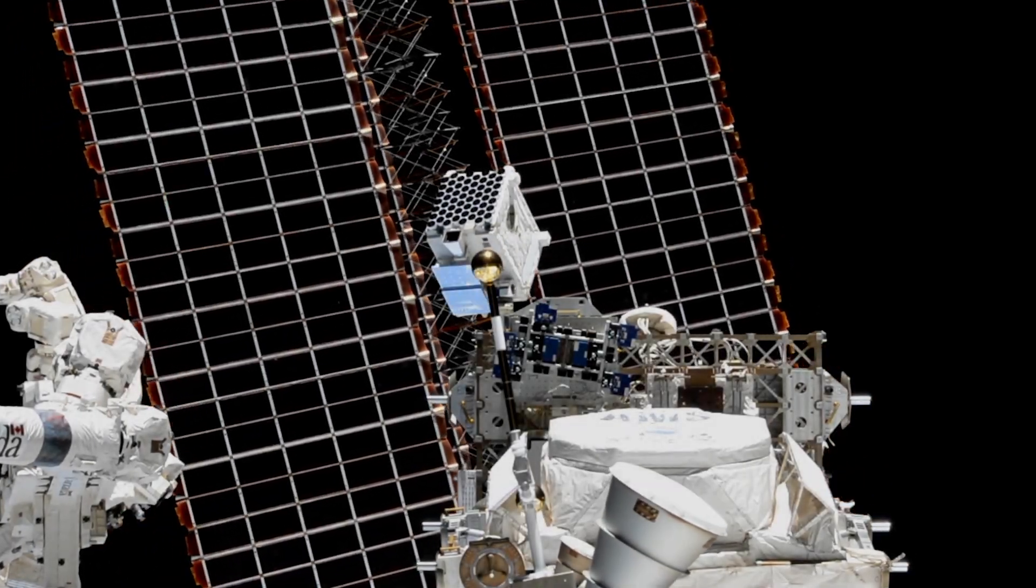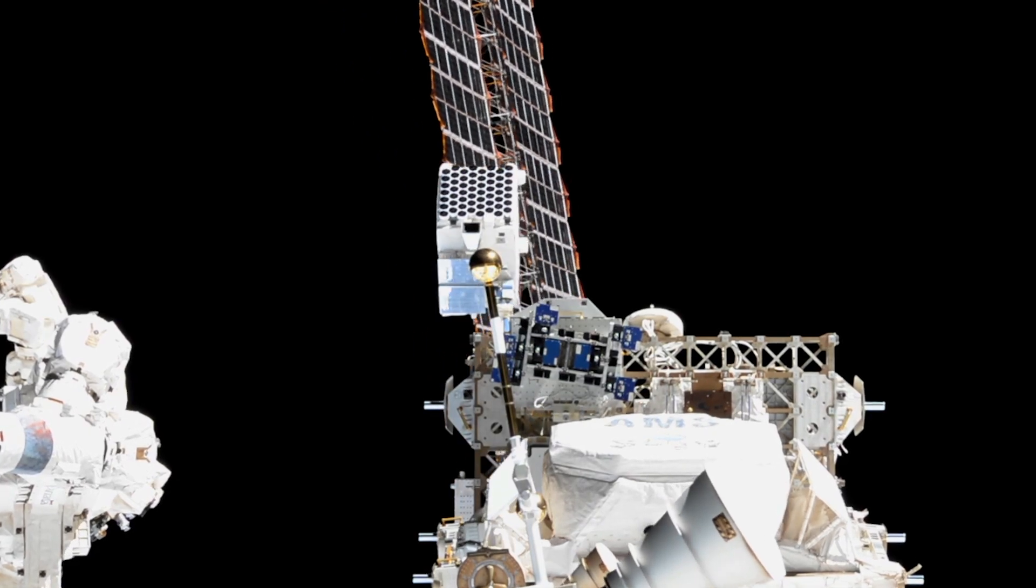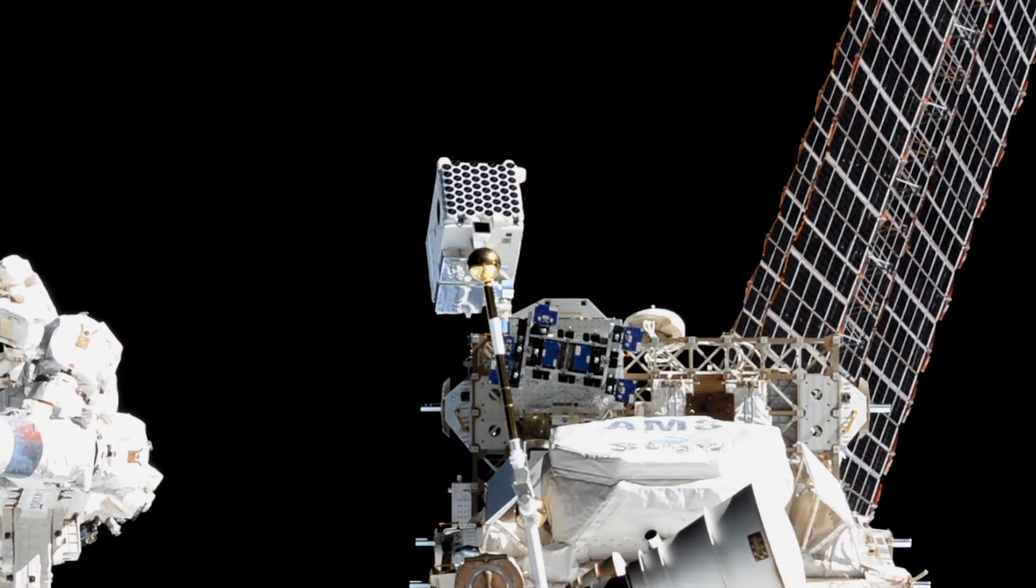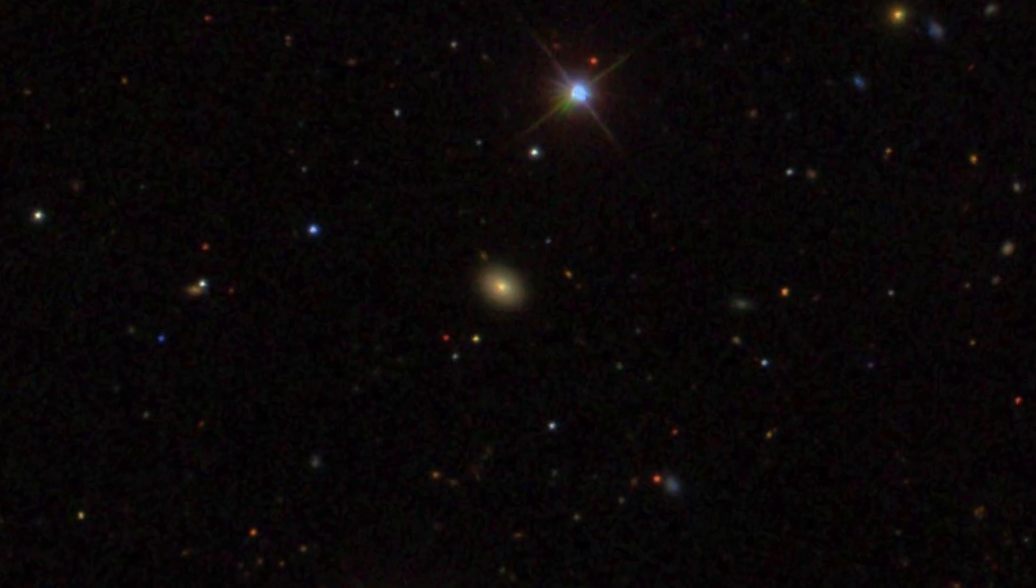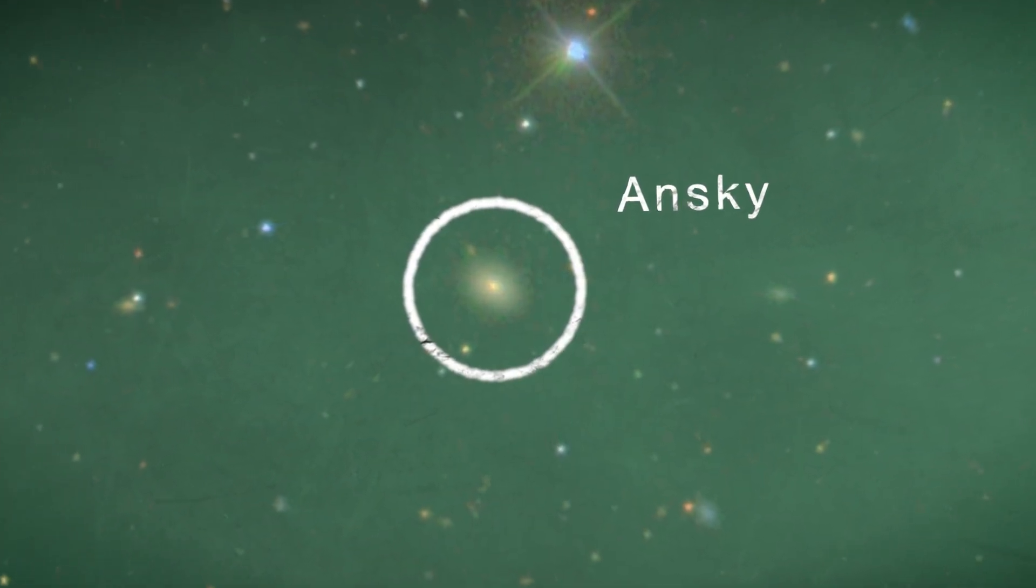From its perch on the International Space Station, NASA's NICER X-ray Telescope has helped map a mysterious cosmic event for the first time. It happened in a galaxy 300 million light-years away. Astronomers call this system ANSCE.